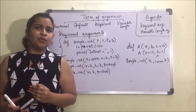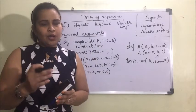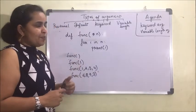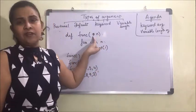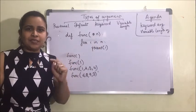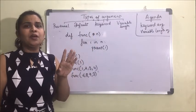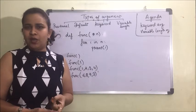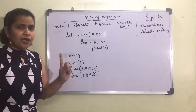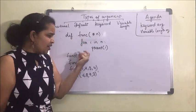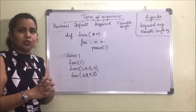The next topic is variable length arguments, which are used when we don't know how many arguments we are going to send — when the number of arguments is not fixed. We use a star sign (*) in front of the parameter while defining the function. This means the length of arguments is not fixed; we can send zero, one, two, four, ten, or any number of arguments. Whatever arguments are sent will be converted into a tuple.